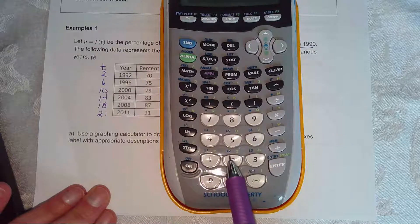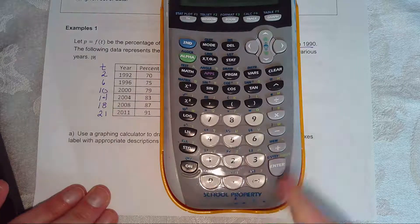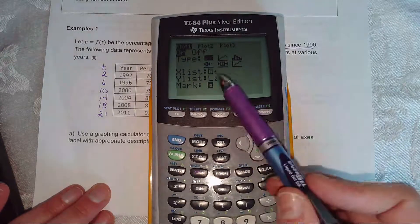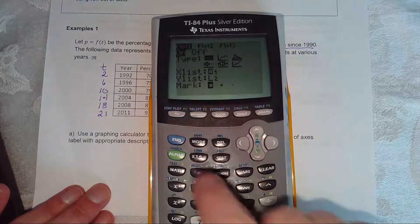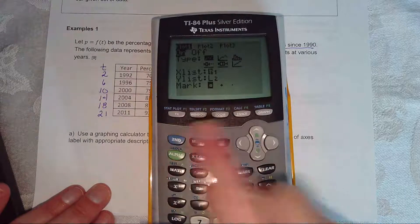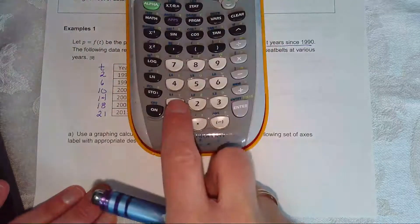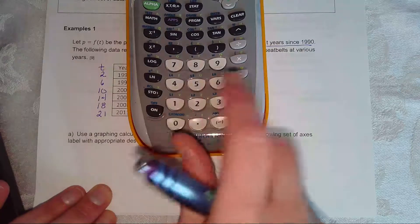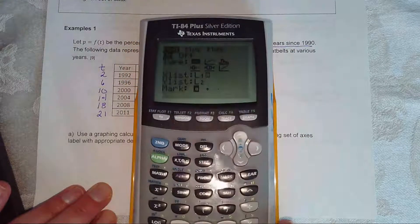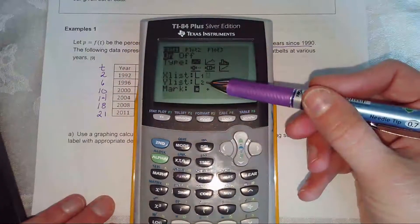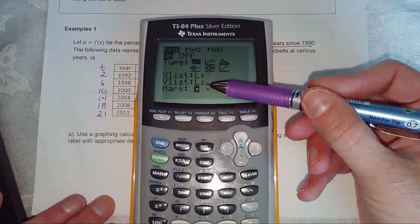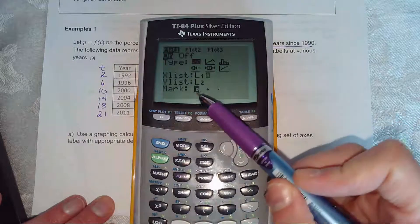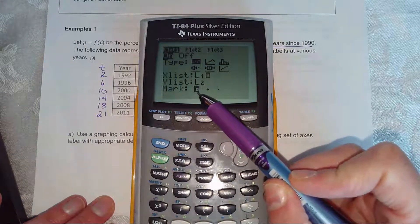Do you see it says L1 and L2? They're in blue. So you have to hit the blue key first. So if I want to put L1 as my x list, I'm going to hit my second key. And then I'm going to hit number one. Do you see L1 right above the number one? And then L2 should pop up or L1 should pop up. And then you can repeat to make sure L2 is your y list. And then this is how I like the first option. That's what my points are going to look like.